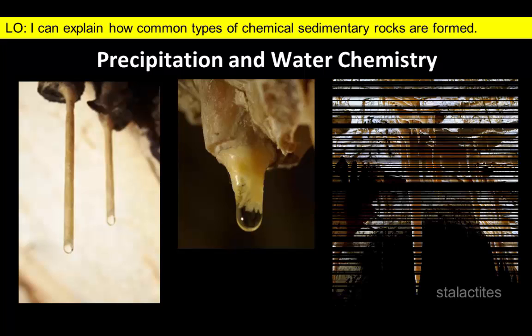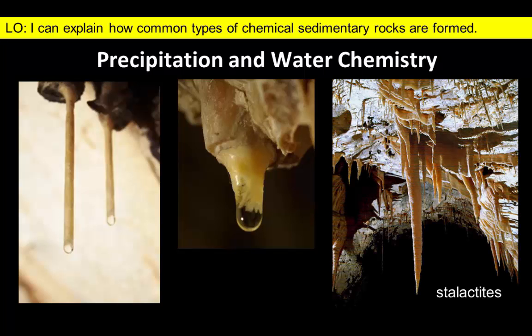Each water drop loses carbon dioxide and deposits a film of the mineral calcite, which eventually builds up to form features such as these stalactites.